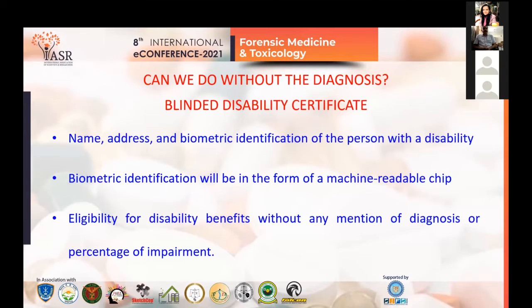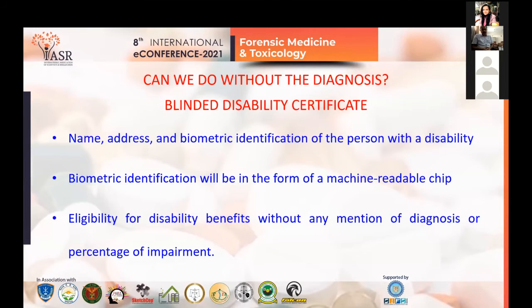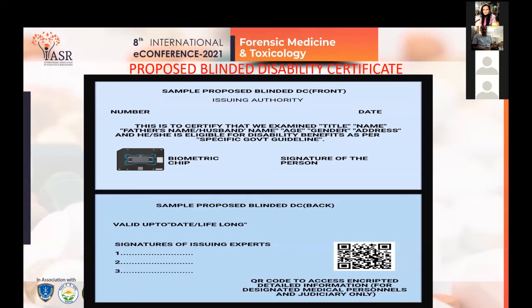So can we do without the diagnosis in the blinded disability certificate? The proposed blinded disability certificate will feature the name, address, and biometric identification of the person with a disability. Biometric identification will be in the form of a machine-readable chip. The hard copy of the blinded disability certificate will contain eligibility for disability benefits without any mention of diagnosis or percentage of impairment. This is the concept of the proposed blinded disability certificate with a QR code.